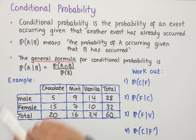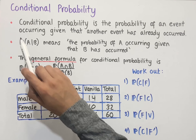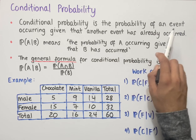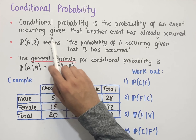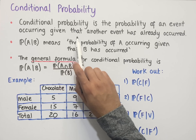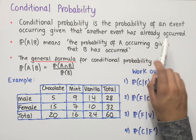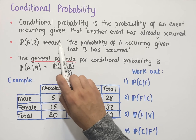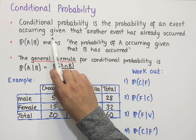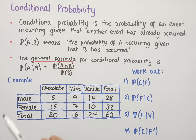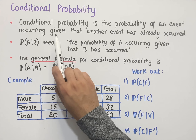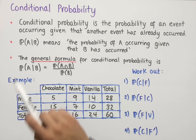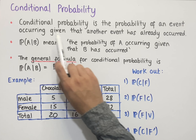Let's look at conditional probability. Conditional probability is the probability of an event occurring given that another event has already occurred. The key word within conditional probability is the word 'given.' Whenever we see this within a question, the first thing that should come to our mind is conditional probability.